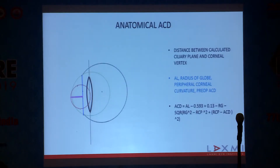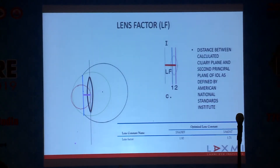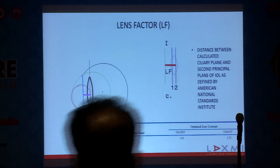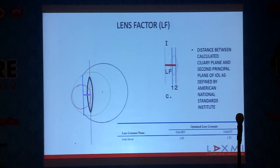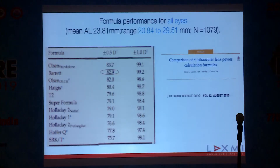The anatomical anterior chamber depth is defined as the distance between the calculated ciliary plane and the corneal vertex, calculated using axial length, globe radius, peripheral corneal curvature, and preoperative anterior chamber depth. The lens factor is the distance between the calculated ciliary plane and the second principal plane of the IOL as defined by American National Institute standards — for example, for AcrySof IQ it is 1.90. Finally, effective lens position is the sum of the anatomical anterior chamber depth and the lens factor.